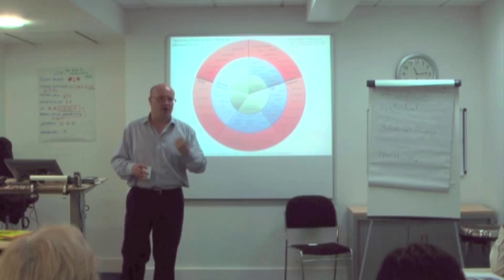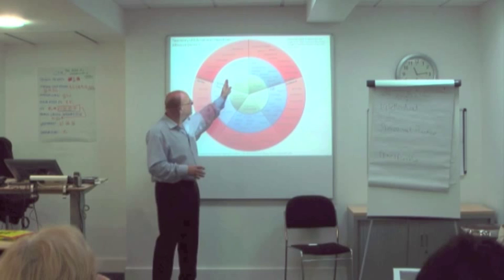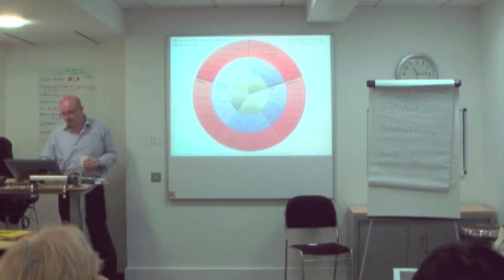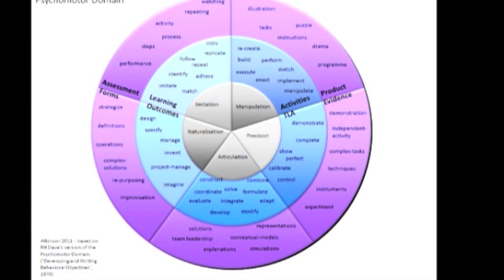You go through in a similar pattern. The third domain, which received very little attention in the 1960s but was picked up in the early 1970s, is the psychomotor domain. It's unfortunately named, because someone once insisted it just meant — could they lay bricks? — and had no relevance to biology undergraduates. But we're not just talking about very simple physical and motor skills.